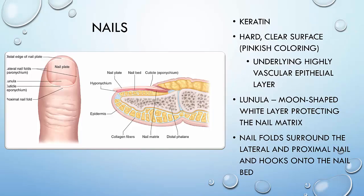The nails are made up largely of keratin, found on the dorsal surface of all the fingers and the toes. They present a hard, clear surface with a pink color from the underlying highly vascular epithelial cell layer. The lunula is at the proximal end and is moon-shaped — a white, opaque layer that protects the nail matrix. The nail folds surround the lateral and proximal nail and hook into the nail bed.